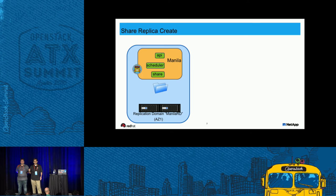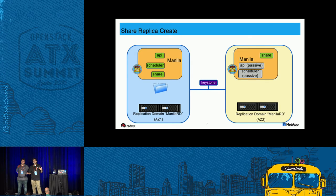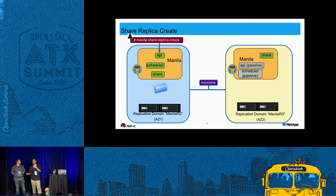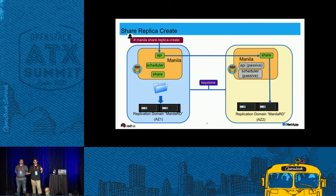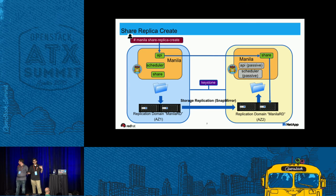The share replica create command allows you to create a share replica. What I'm going to show you is what happens behind the scenes when you issue that command. We have two availability zones sharing a common Keystone infrastructure. The Manila service has the API, scheduler, and share services. The administrator issues a share replica create command received by the API service. The API service finds a share backend in the second availability zone. The share backend contacts the storage controller to make a replica — in the case of NetApp, this is done using SnapMirror. Once replication is complete, the share service updates your MySQL database and OpenStack infrastructure to replica status available.